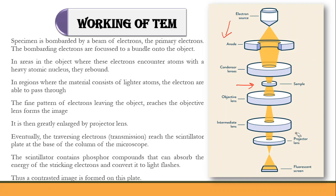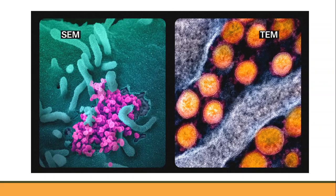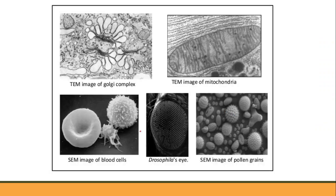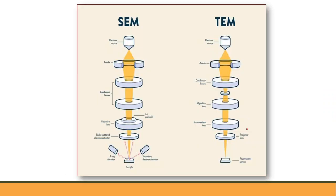To compare SEM and TEM images: SEM shows only how a pollen grain looks from the outside — its outer surface — while TEM reveals the many internal components. For COVID-19, SEM shows what the virus looks like from outside, while TEM shows its internal structure. Similarly for blood cells, pollen grains, and mitochondria — TEM gives internal structure while SEM gives the outer structure.